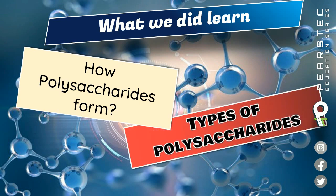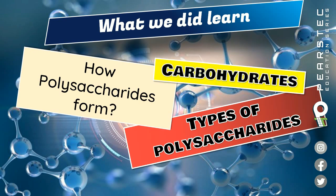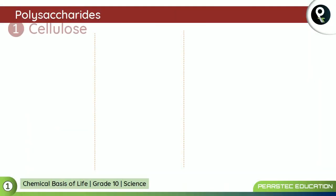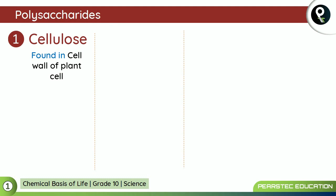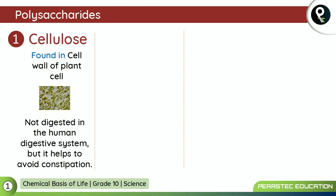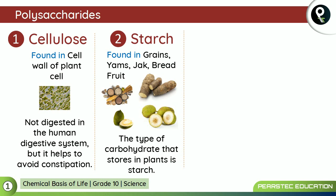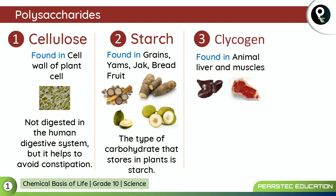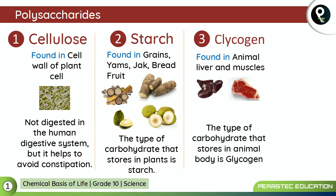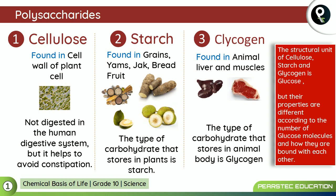So we have learned how polysaccharides are formed and the types of polysaccharides. To recap: cellulose is found in cell walls of plant cells and is not digested in the human digestive system but helps avoid constipation. Starch is found in grains, yams, jackfruit, and breadfruit and is the carbohydrate stored in plants. Glycogen is found in animal liver and muscles and is the carbohydrate stored in the animal body. The structural unit of cellulose, starch, and glycogen is glucose, but their properties differ according to the number of glucose molecules and how they are bound.